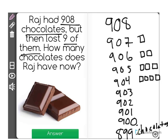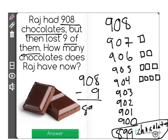Now, basically what we just did there is a subtraction problem. We started with 908, and we subtracted 9 to get our answer of 899.